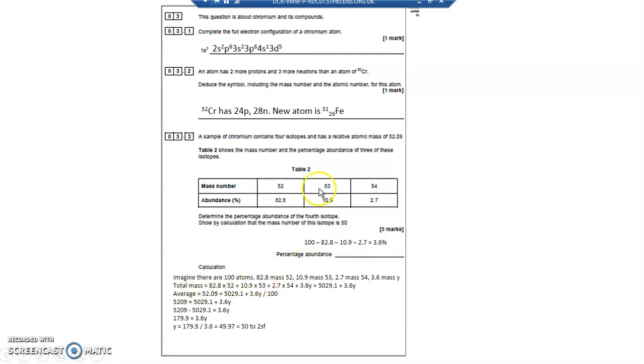So the calculation, then, imagine you've got 100 atoms. That's always a good step to start off with. So, out of the 100 atoms, percentages is amount out of 100, 82.8 have got mass 52. 10.9 particles, atoms, out of 100 have got mass 53. 2.7 of the particles out of 100 have got mass 54. And 3.6% of the remaining isotope. I don't know what its mass is, and so I'm going to call it mass Y.